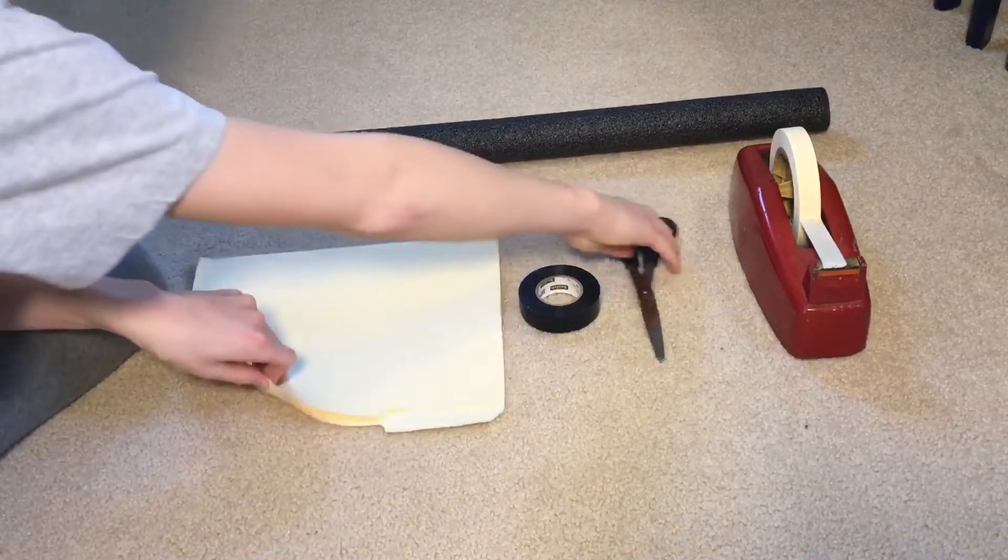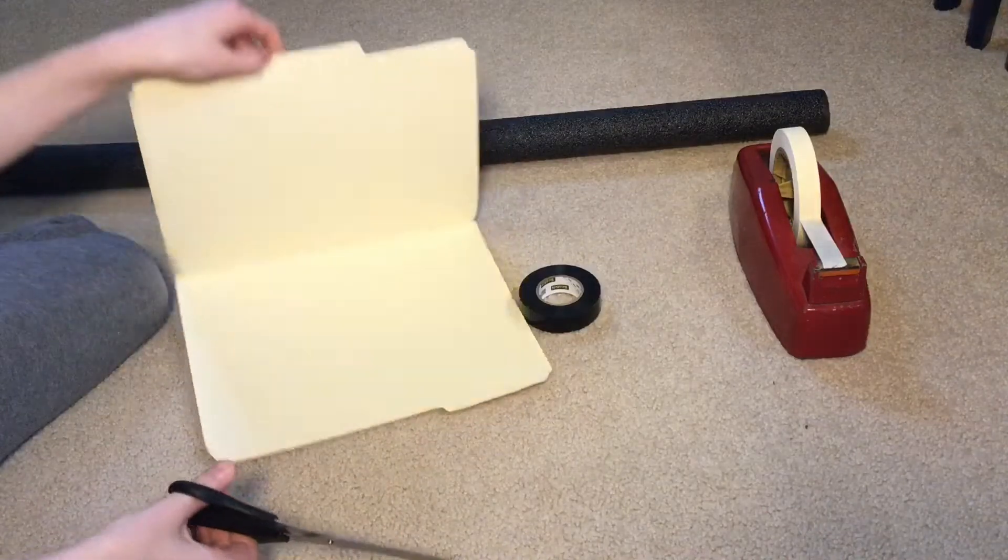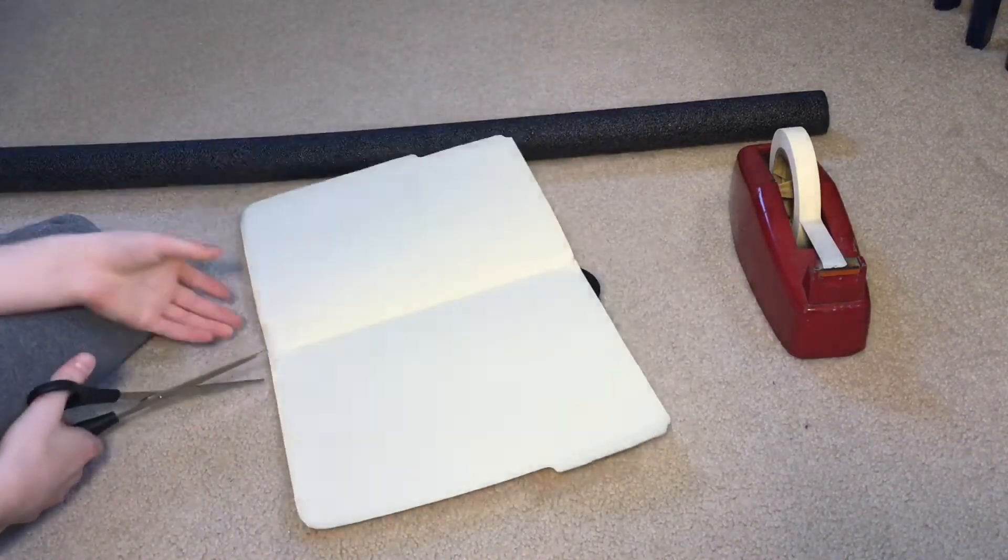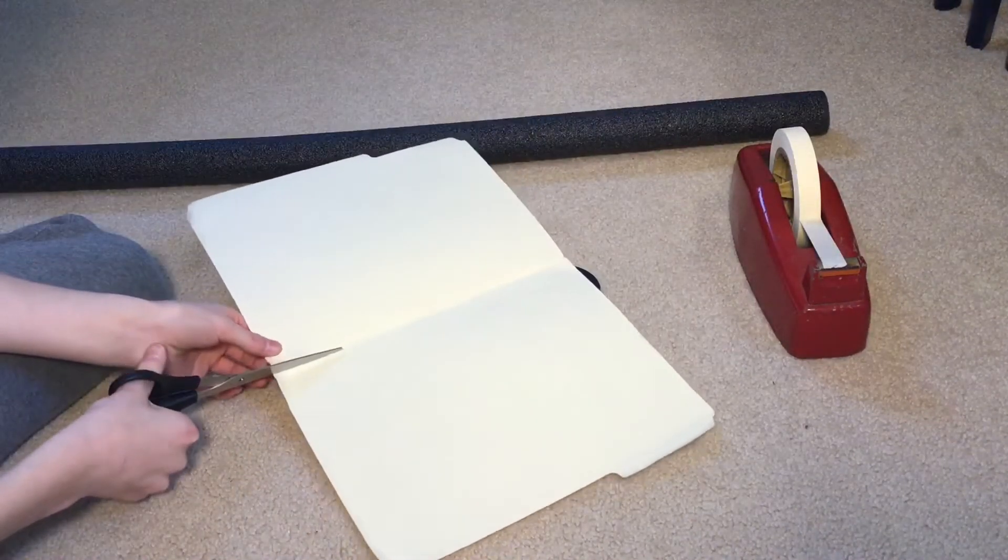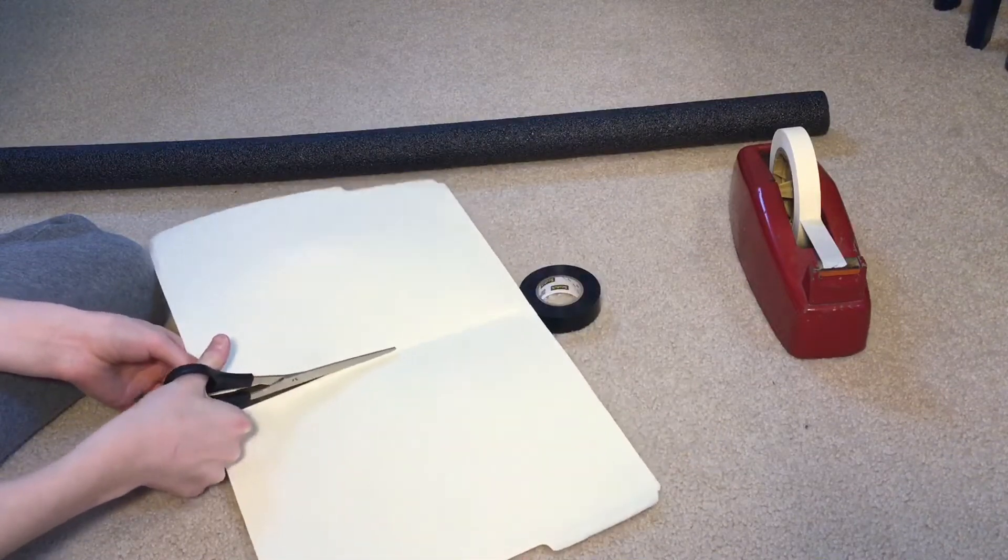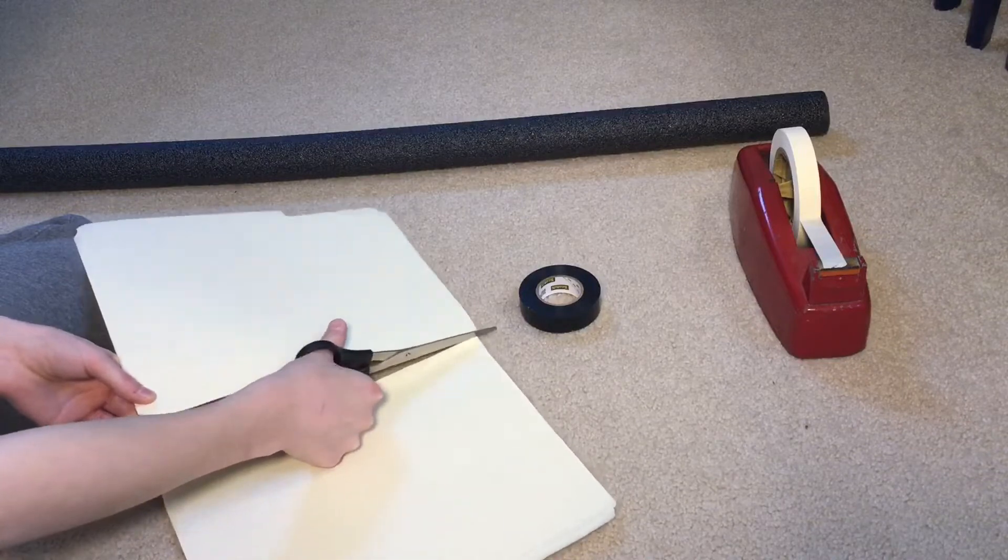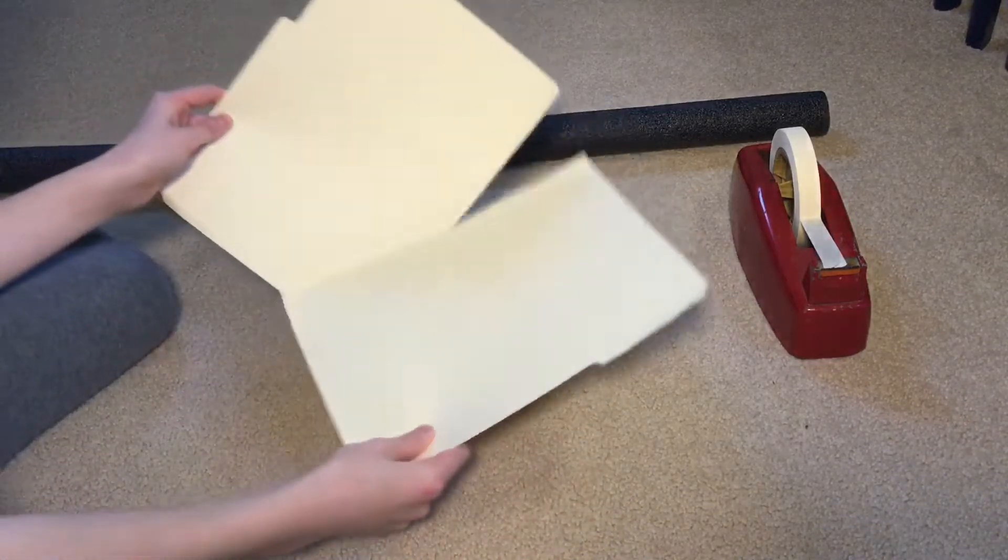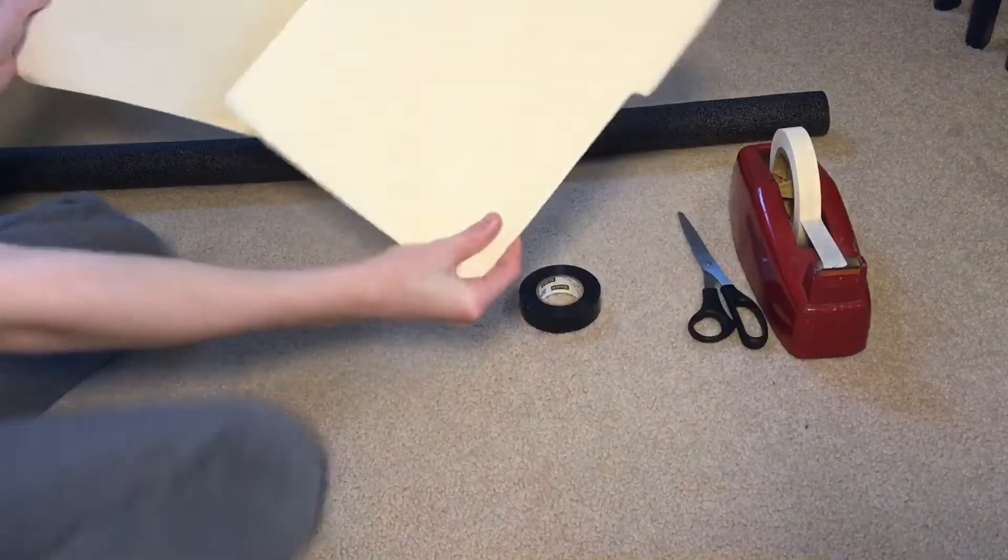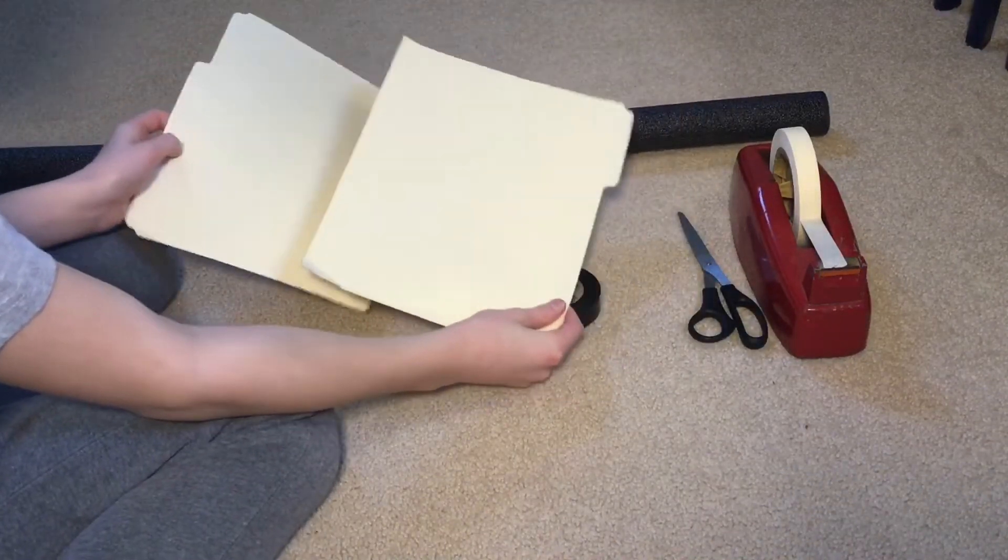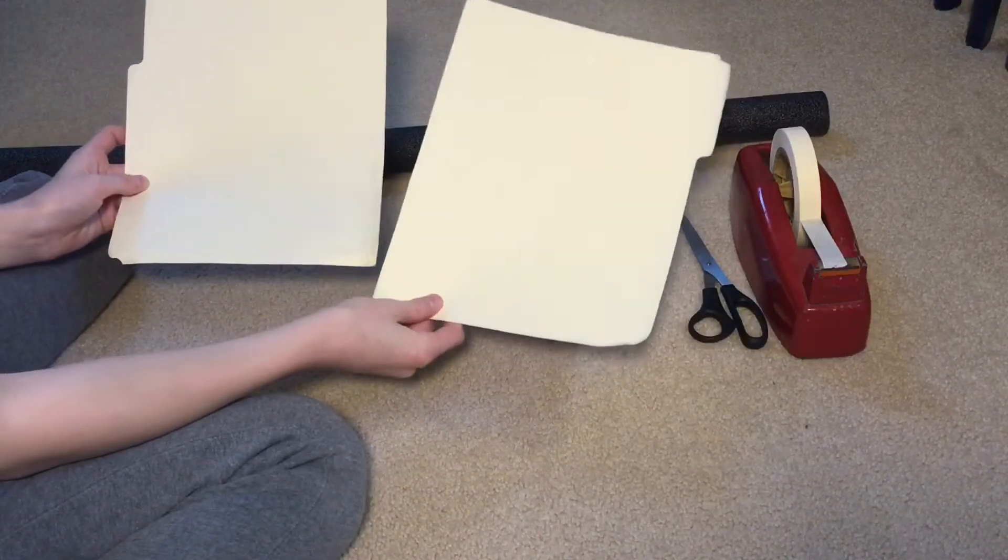The first thing you want to do is cut your vanilla folder in half. Once you've got your vanilla folder cut in half, make sure you do not throw away either side. You're going to need both sides later.